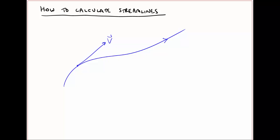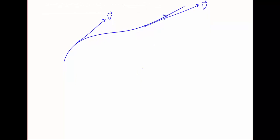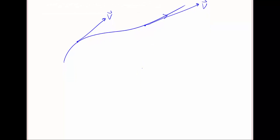So this streamline, at this point, is parallel or tangent to the local velocity vector. The same thing is true at any point along the streamline. Now, how do we solve for the equation for a streamline?